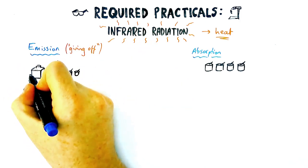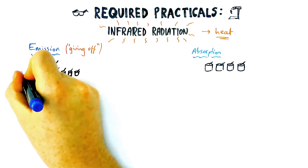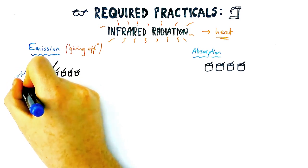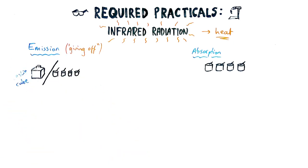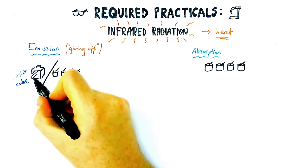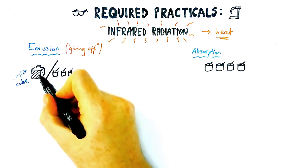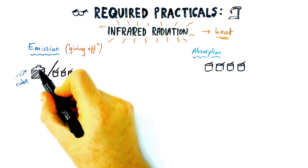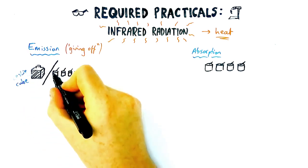There are two parts to it. There's the emission of infrared radiation — giving it off. We do this in two ways: one with a Leslie cube, which is a cube with different sides with different surfaces — one black, one white, one metal, etc.